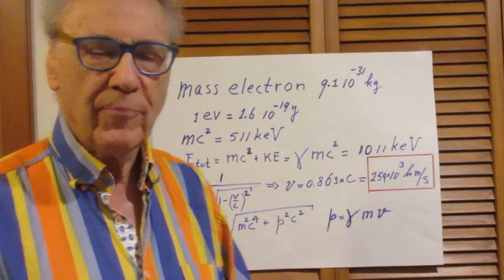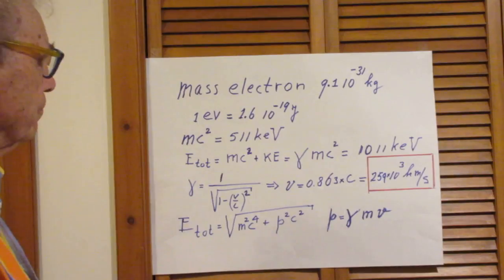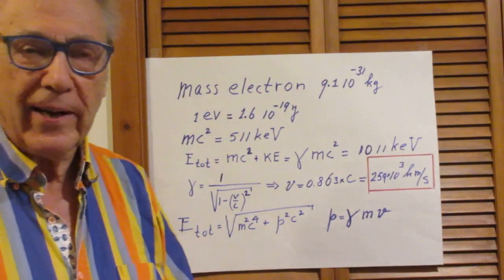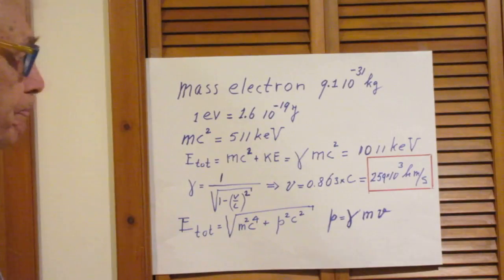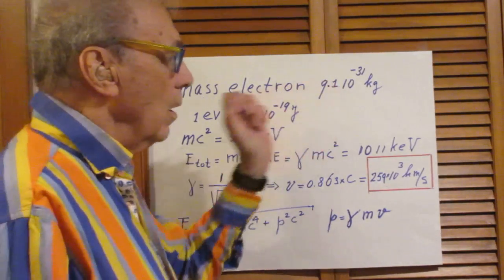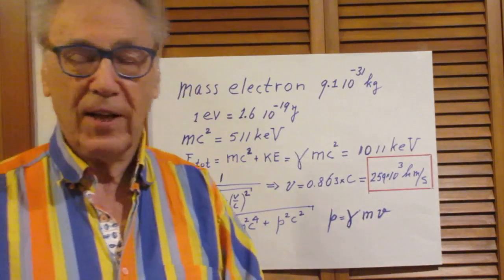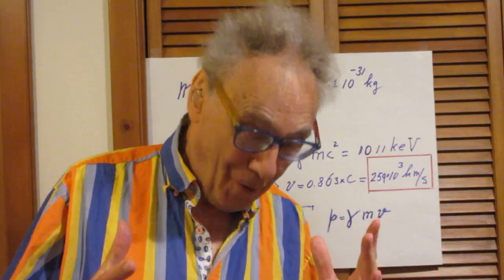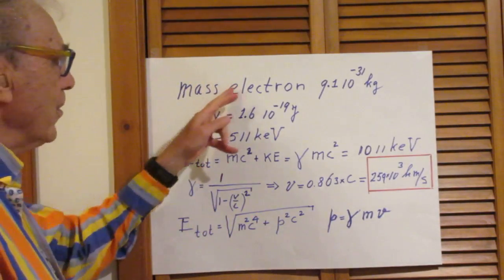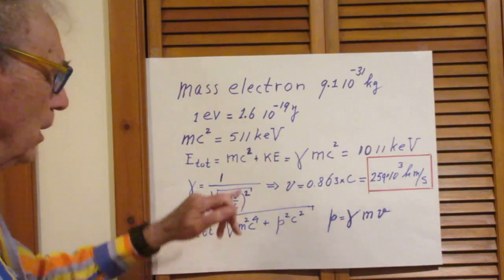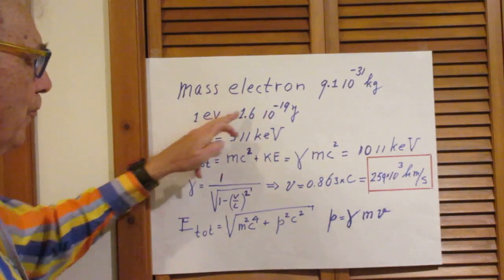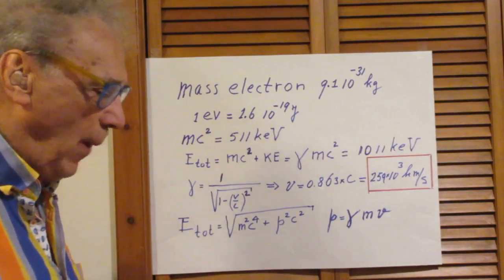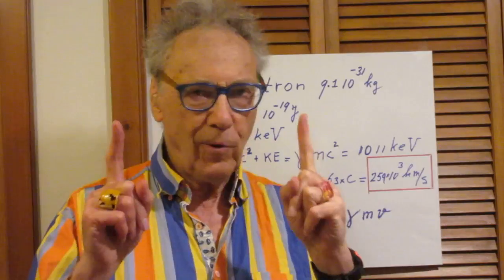The mass of an electron is 9.1 times 10 to the minus 31 kilograms. If you want to know how much energy that represents, you multiply this by c squared and you get the energy in joules. Most physicists — and certainly those who study nuclear physics — will never express the energy of that mass in terms of joules, but in terms of kilo electron volts. Here you can see the conversion from joules to electron volts. So mc squared of an electron is 511 kilo electron volts.